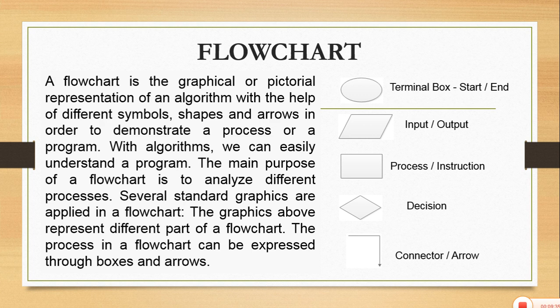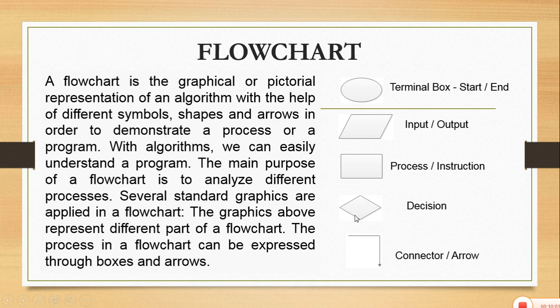The main purpose of a flowchart is to analyze different processes. There are certain standard symbols: the oval shape represents the start and end of the process, the parallelogram is for input and output, the rectangle is for the process or instructions, the diamond shape is for decision-making, and the arrow sign is used for the connector or represents the direction of the process.